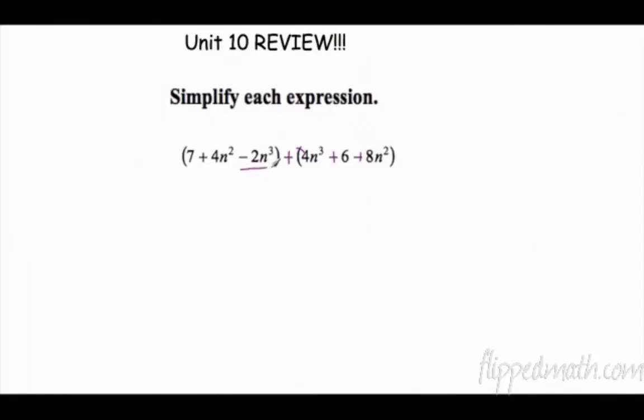Now it's just about going back and finding like terms. I have negative 2n to the third that's going to go with negative 4n to the third, that's negative 6n to the third. I'm going to cross them out so I know I'm done with them. I like standard form, so now my next highest exponent would be squares. So 4 n squares plus 8 n squares is 12 n squared. Remember when we add we don't change the exponent at all, we're just adding the coefficients.